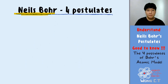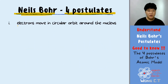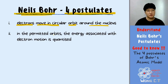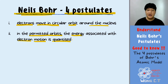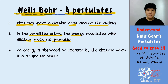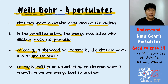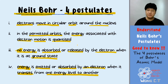Just a kind reminder: Niels Bohr proposed four postulates. The first one — the electron will move in a circular orbit around the nucleus. The second — in the permitted orbit, the energy of the electron motion is quantized, so every electron in a certain energy level has a fixed amount of energy. The third postulate is that there will be no energy absorbed or released when the electron remains at ground state. And the fourth — energy will be emitted or absorbed by an electron when it transits from one energy level to another.